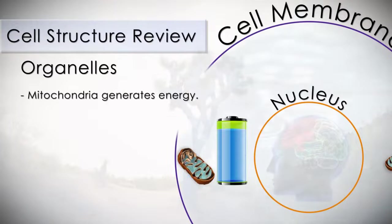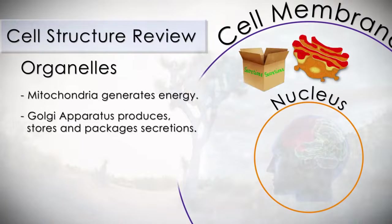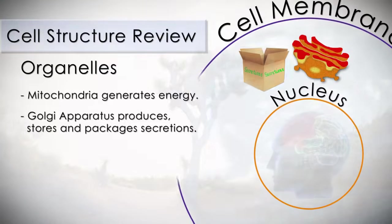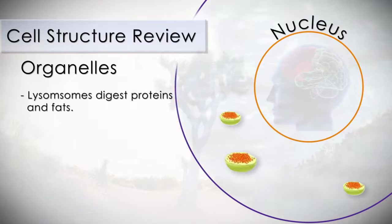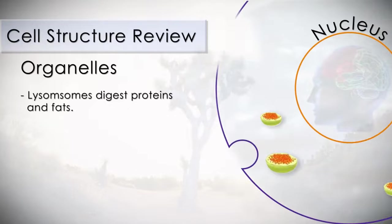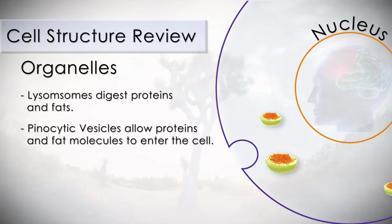The mitochondria generates energy for the cell. Golgi apparatus produces, stores, and packages secretions for discharge from the cell. The endoplasmic reticulum transports materials into and out of the nucleus. Lysosomes digest proteins and fats, and pinocytic vesicles allow proteins and fat molecules to enter the cell.